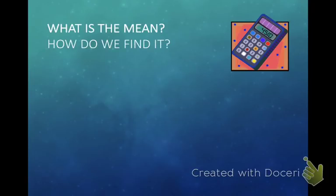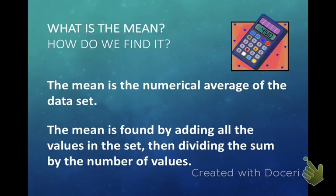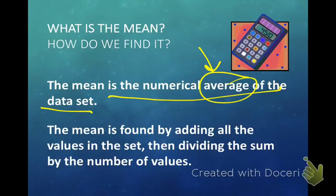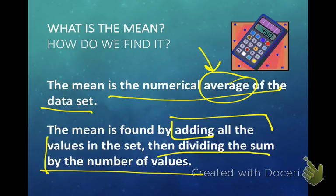Right now we're going to first start with: what is the Mean and how do we find it? The Mean is the numerical average of the data set. That's the big one you need to know — the average. The Mean is also found by adding all the values in the set and then dividing the sum by the number of values. So both "what is it" and "how do we find it" are on this slide. If you need to pause it, pause it.